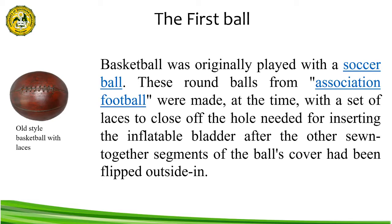How did basketball get its name? Frank Mahan, one of the players from the original first game, approached Naismith after the Christmas break in 1892 and asked what he intended to call his new game. Naismith replied that he hadn't thought of it because he had been focused on just getting the game started. Mahan suggested calling it 'Naismith Ball,' but Naismith disagreed, thinking a name like that would kill any game. Mahan then said, 'Why not call it basketball?' Naismith replied, 'We have a basket and a ball — it can be a good name for it.' From then on, the game was named basketball.